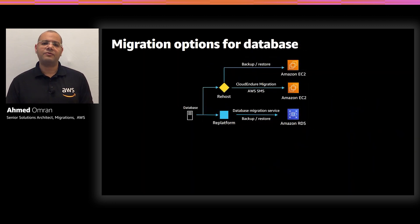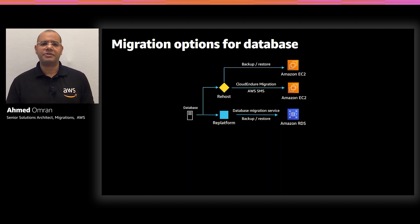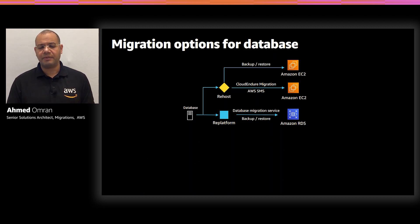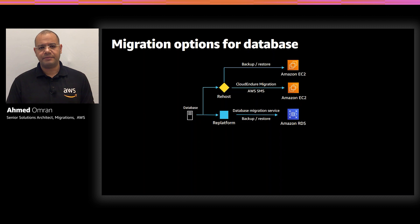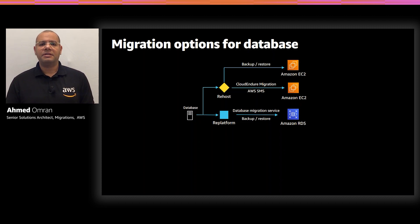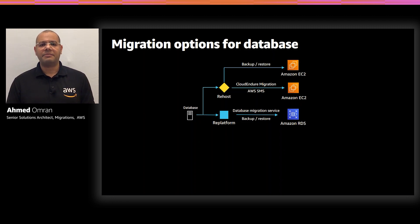For the database, we have two options. The first option is re-platform, where we migrate the database to an AWS managed service. This can be done through backup and restore, which is a potential option for small databases if we can afford longer planned downtime, or we can use AWS Database Migration Service, which allows continuous data replication to minimize downtime. The other option is re-hosting, which can be done in a couple of ways — using migration tools to migrate the whole system with the database to an EC2 instance, or building the database on EC2 and doing backup and restore for the source database, which is applicable for small databases where longer planned downtime is acceptable.